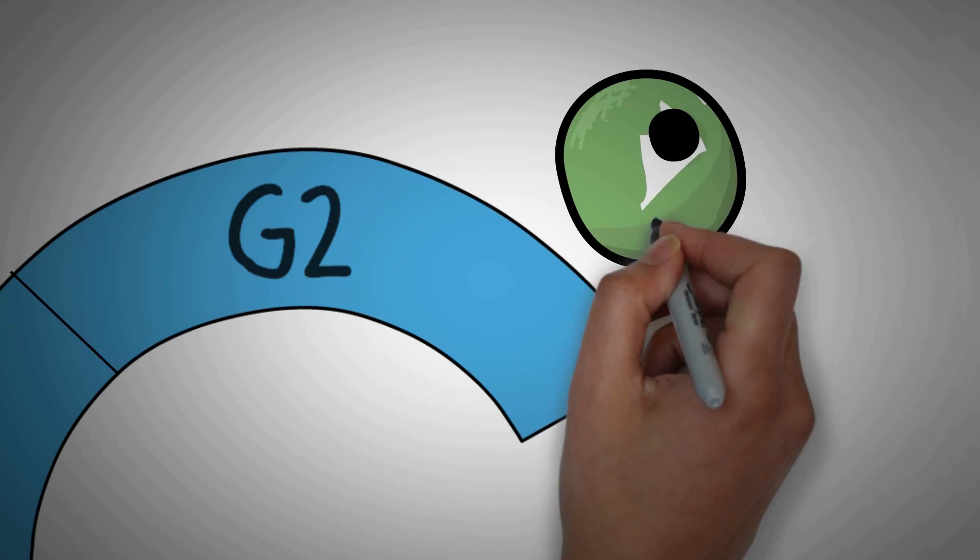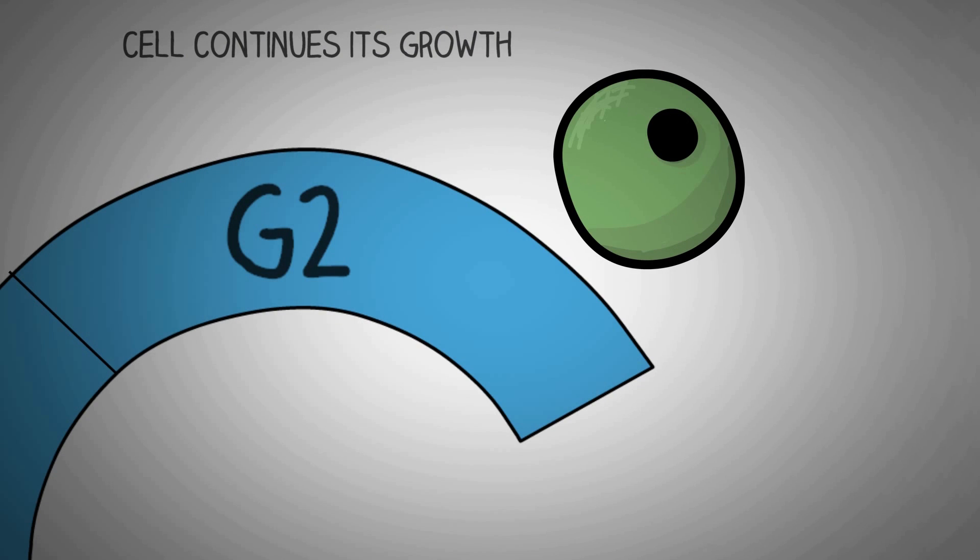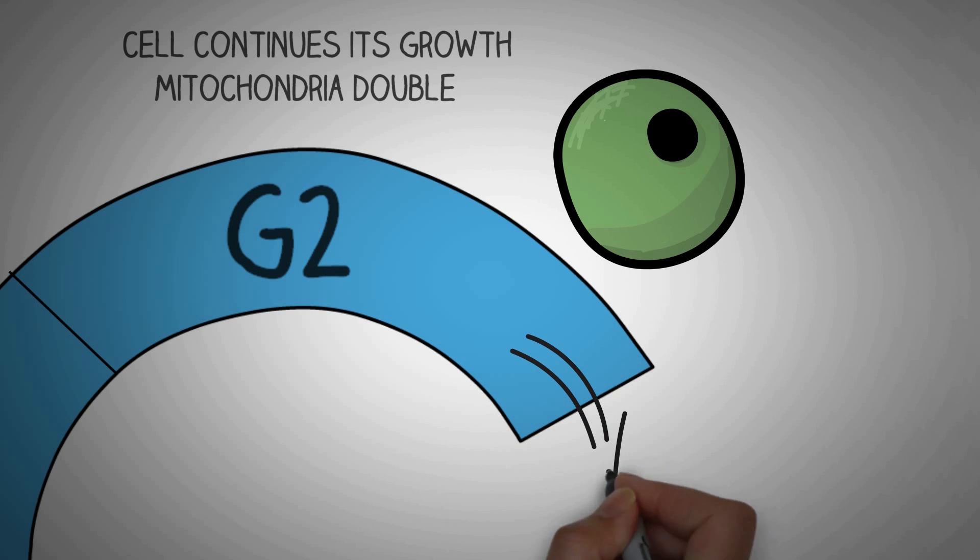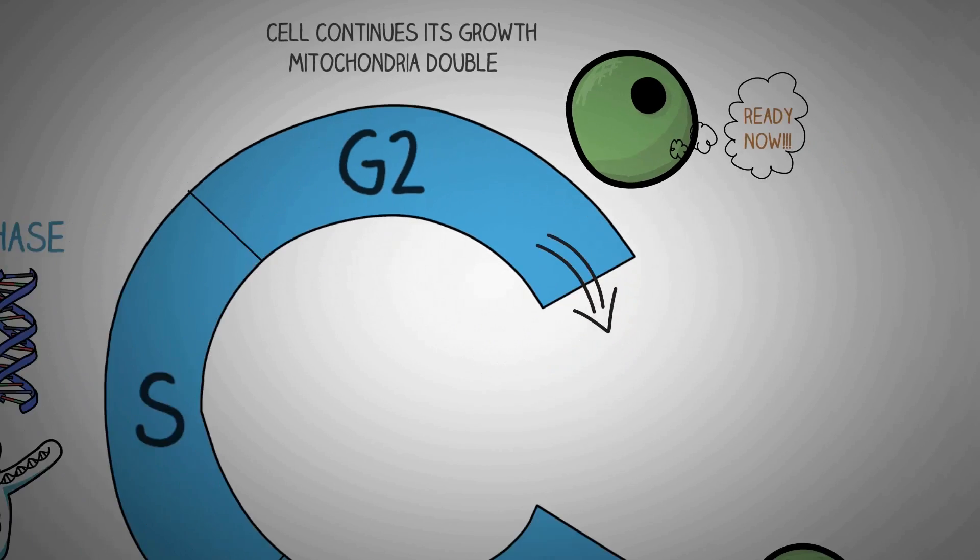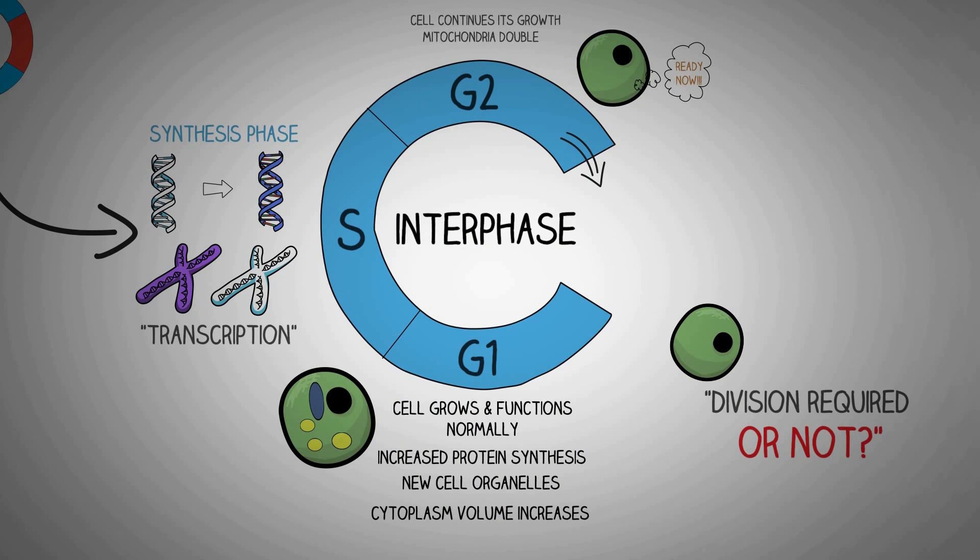The next phase is known as the G2 phase in which the cell continues its growth and gets ready for cell division. The mitochondria of the cell doubles and the cell continues to grow until the process of division starts. So this was interphase during which the cell grows and prepares for cell division.